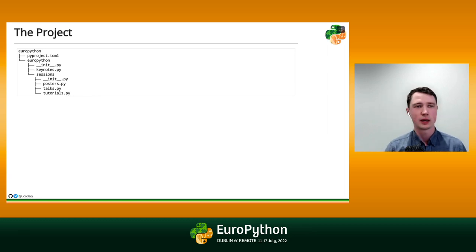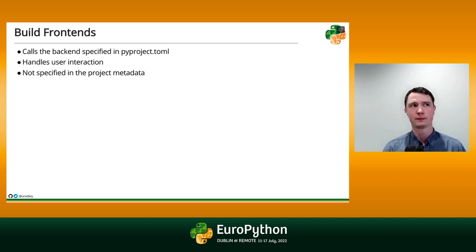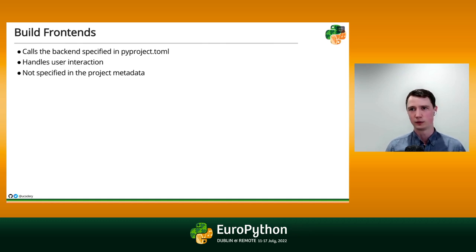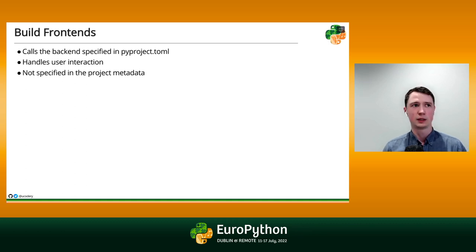We're going to look at a new category of tool called the build frontend. Build frontends are designed to call build backends and interact with each other through an API that's been standardized so that any build frontend can work with any build backend. We're going to choose a build frontend and install it, but we're not going to record our choice anywhere in the project. The choice of a build frontend is much more personal than the choice of a build backend — whoever is building the project gets to choose. The author chooses the one and only build backend, but any frontend could build it.